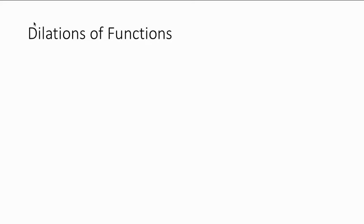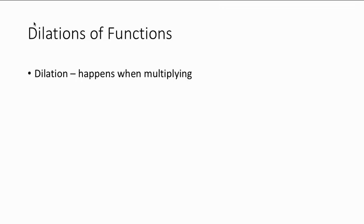Next we're going to talk about dilations of functions — we've also known these as a stretch or compression, or a stretch or a shrink of a function. Dilations happen when we are multiplying to our parent function, and there are a couple of different places we can multiply to make a dilation happen.